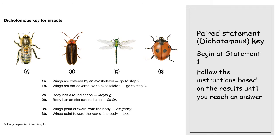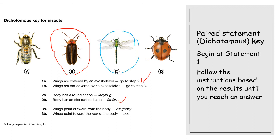The first is a paired statement key, or dichotomous key. It's simply a list of statements paired together. You start at statement one and follow the instructions until you reach the answer. For example, identifying bug B: statement 1a is 'wings are covered by an exoskeleton,' 1b is 'wings are not covered by an exoskeleton.' I can't see the wings, so they are covered — I go to statement two. 2a: body has a round shape. 2b: body has an elongated shape. It is elongated, therefore it's a firefly.